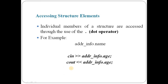For accessing the structure, we use the dot operator. We can access a structure variable using the dot operator. So ADDRESSINFO dot variable name accesses the character-type variable, and we can take input using cin with the dot operator, and similarly print the age using cout.